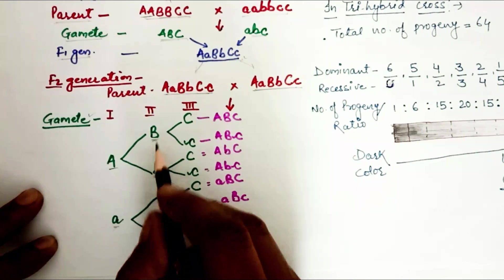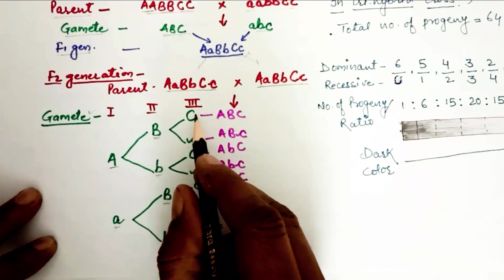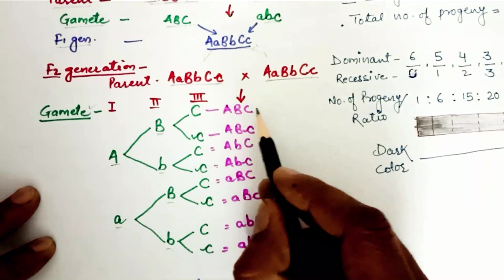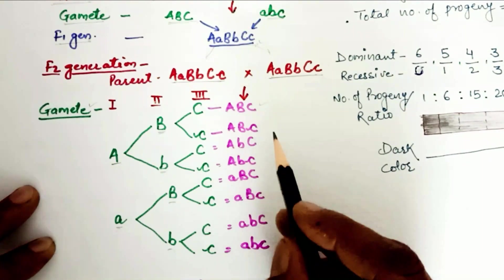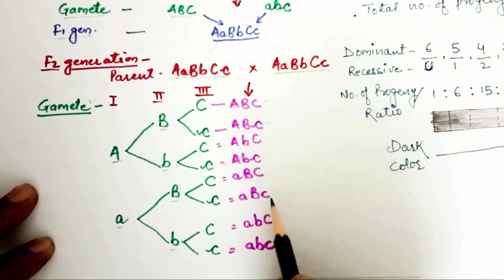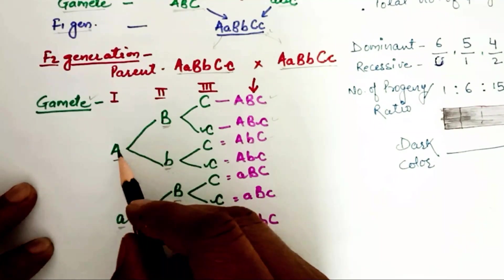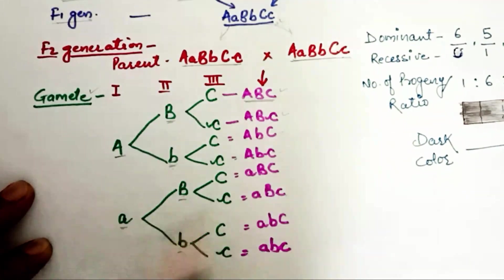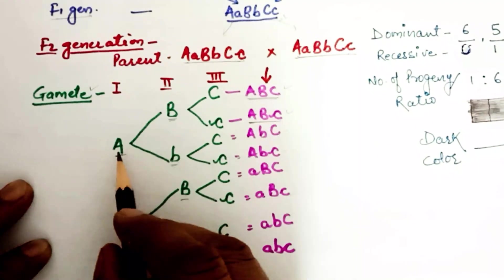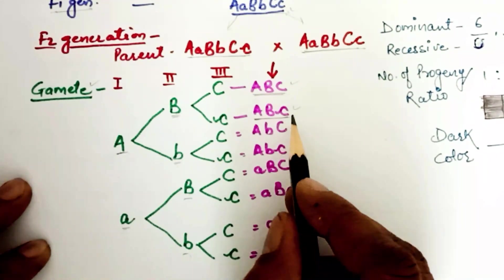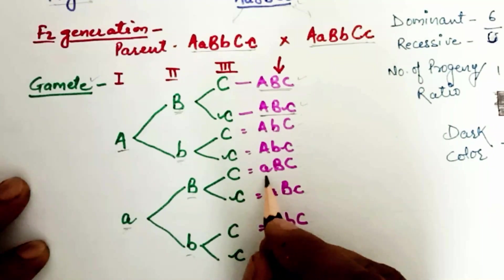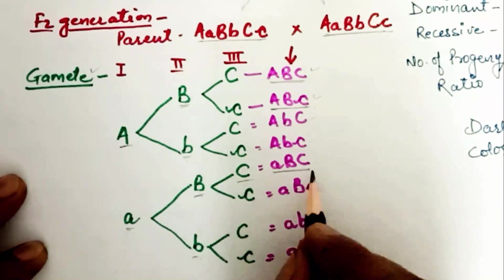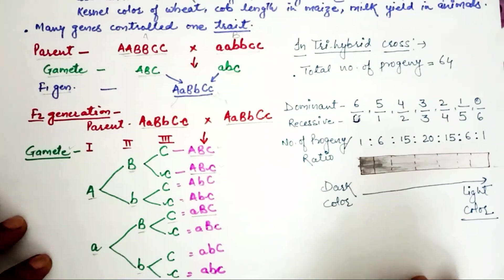Let's see that the gametes are 8 types: 1, 2, 3, 4, 5, 6, 7, 8. How do they become? Capital A, capital B, and capital C is the first gamete. The second gamete is capital A, capital B, and small c. When we cross the polygenic inheritance, this is tri-hybrid cross.